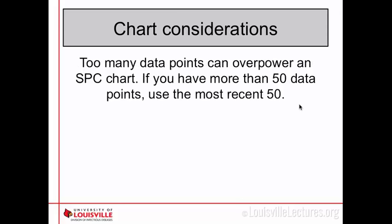If you have too many data points, that can also cause issues — similar to overpowering a study, you could find a very tiny 1% difference that gets flagged as significant. You should generally try to avoid going more than 50 data points, and if you do have more, just use the most recent 50.